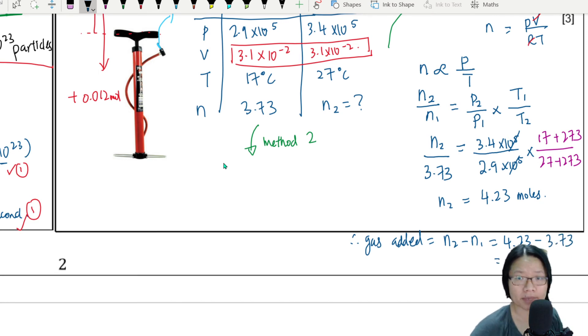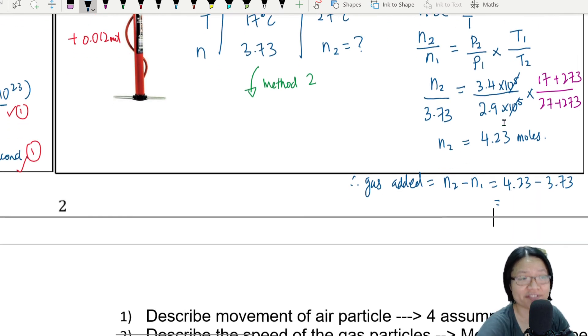That will get me a value of 0.50 moles. So if this is 0.50 moles, then you should ask yourself: how many times do I need to stroke my pump so that I can add this much gas?